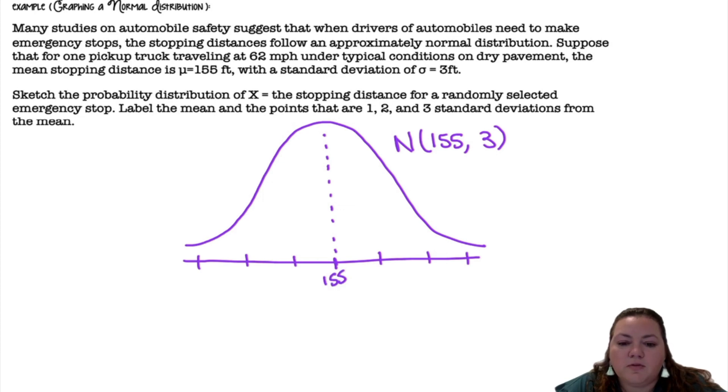So we're going to start with 155 in the center. As I move to the right, I'm going to be adding 3 each time. So 155 plus 3 is 158, 158 plus 3 is 161, and then 164. As I move to the left, I'm going to subtract 3 each time. So 155 minus 3 is 152, minus 3 is 149, minus 3 again is 146. So there's my normal distribution.